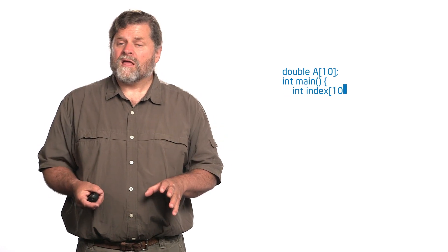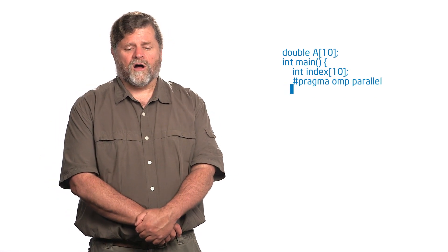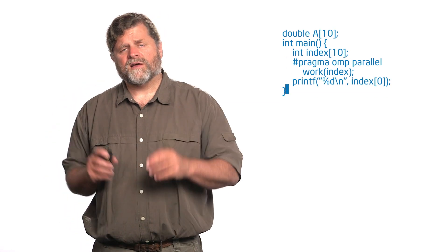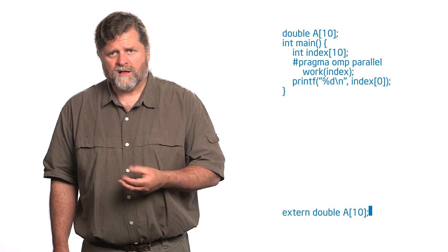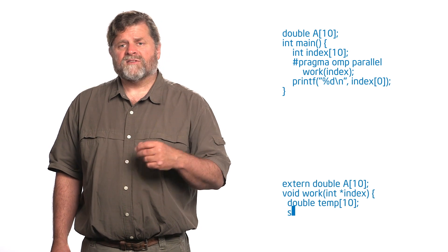I want to come back to this example. I have an array 'a' of 10 elements, then I've got my main function, and then an array 'index' of 10 elements that I'm declaring. Then I have my pragma OMP parallel, and then I call a function called 'work' that I pass 'index' into, and I have a print statement. In that function, I declare that I have this external double array 'a', then inside the function, I declare an array 'temp' and a static int 'count'. I've created this contrived example to have as many different storage classes as I could cram into one little block of code.